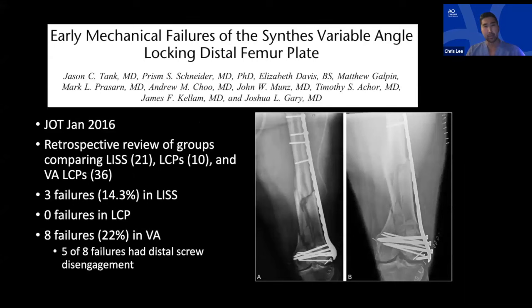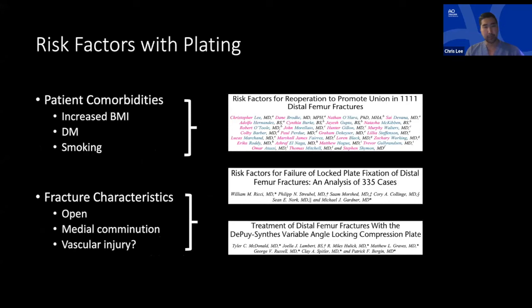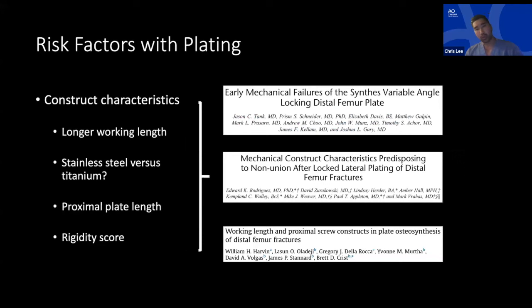A 2016 paper from Houston was eye-opening — showing a 22 percent early failure rate with variable angle distal femur locking plates. For patient risk factors we can't control: increased BMI, diabetes, and smoking are the main culprits — the same problematic factors as most fractures. Fracture characteristics particularly troublesome include significant medial comminution — found in our paper and others — plus open fractures and vascular injuries.